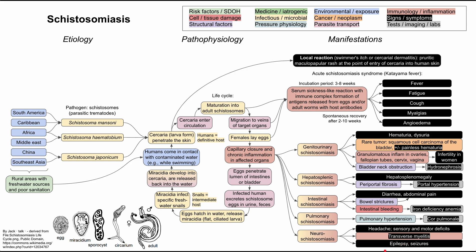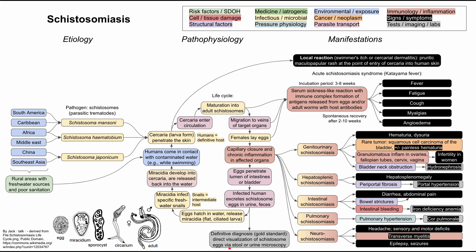For diagnosis, clinical clues and travel history point toward schistosomiasis, but the gold standard is direct visualization of the schistosome eggs via stool or urine microscopy. The same mechanism by which schistosomes perpetuate their life cycle — excreting eggs in feces and urine — is how you diagnose them. I hope this video on schistosomes and schistosomiasis was helpful.